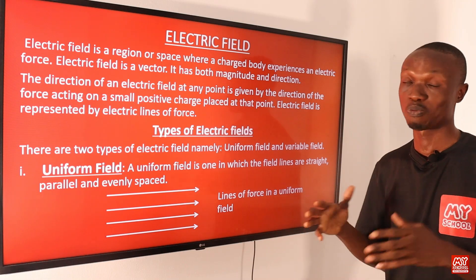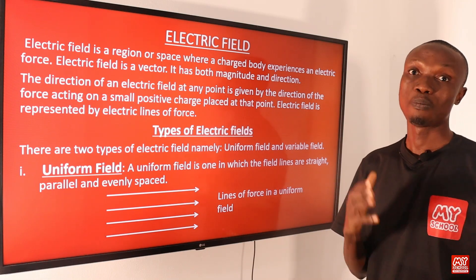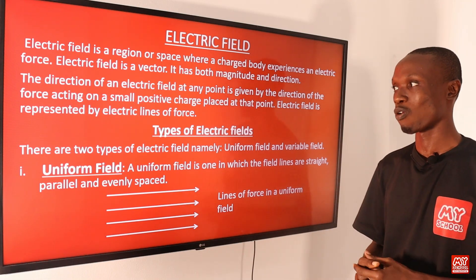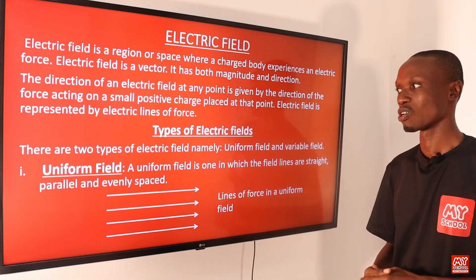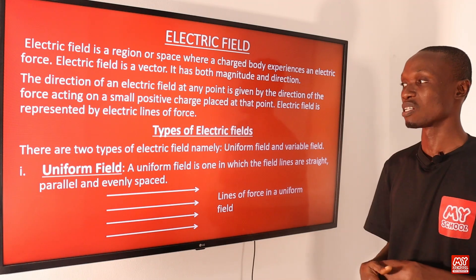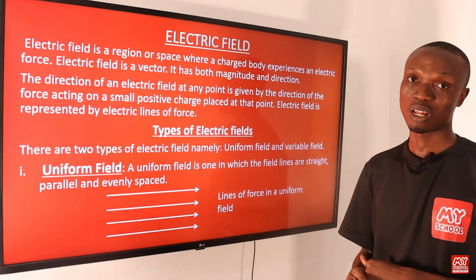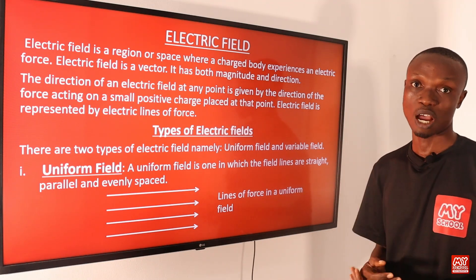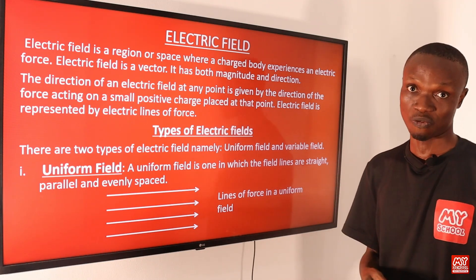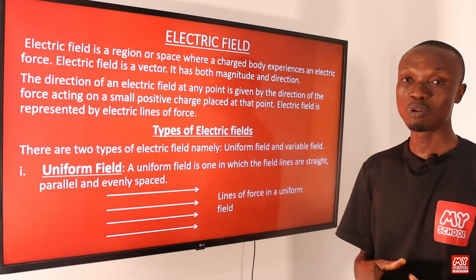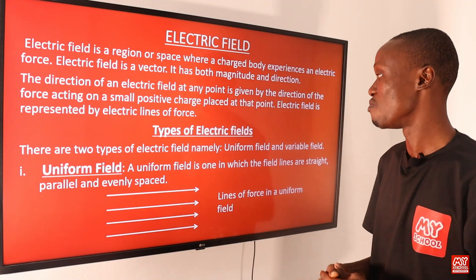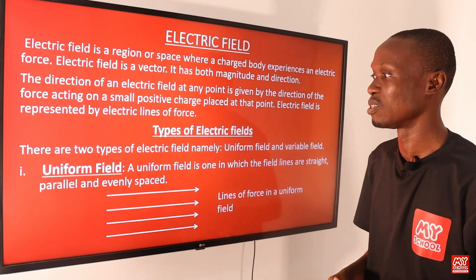Electric field is represented by electric lines of force. Now let's talk about the types of electric field. Basically there are two types of electric fields, namely uniform field and variable field.